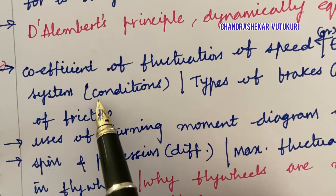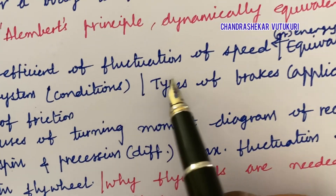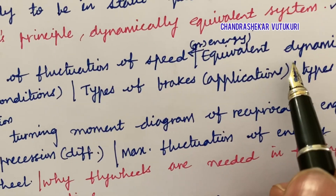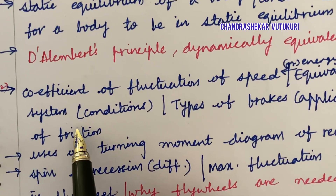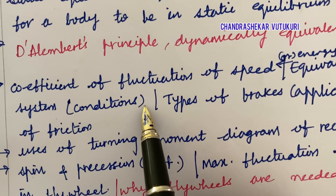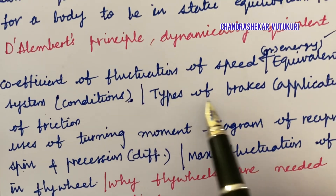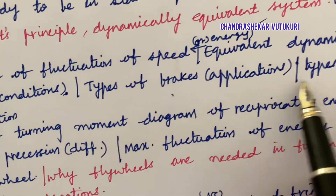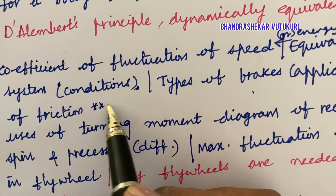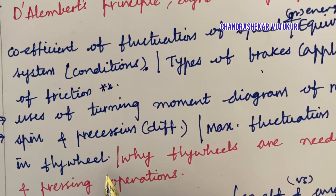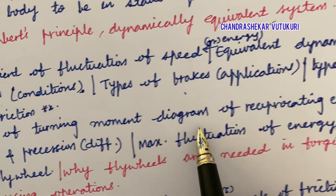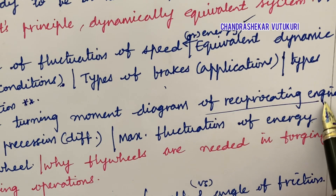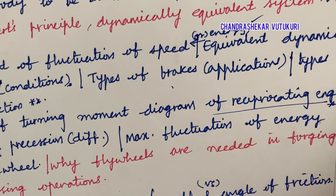Dynamically equivalent system may also be asked in long questions sometimes. Coefficient of fluctuation of speed as well as energy, equivalent dynamic system and its conditions, types of brakes and their applications — these are important. Types of friction is also said to be a top-most question, and uses of the turning moment diagram of a reciprocating engine are also key topics.